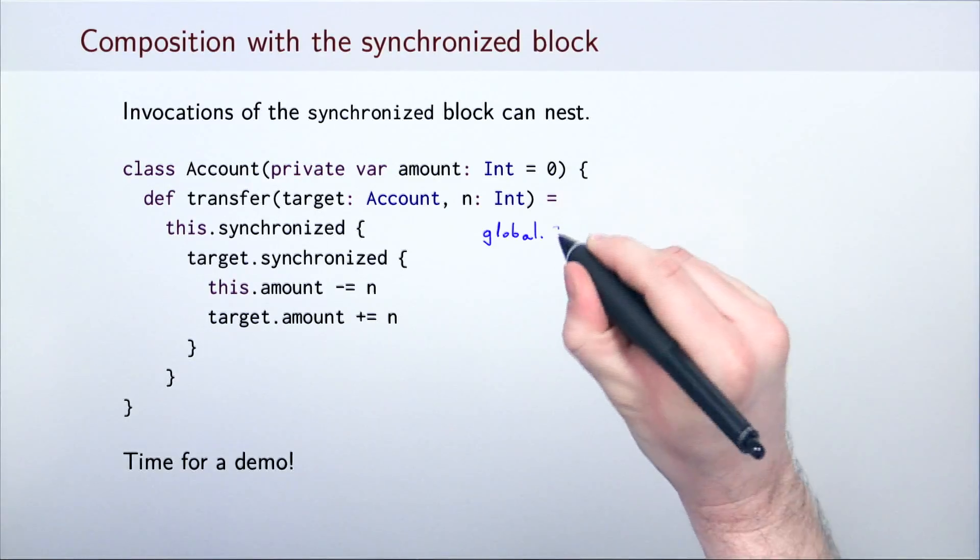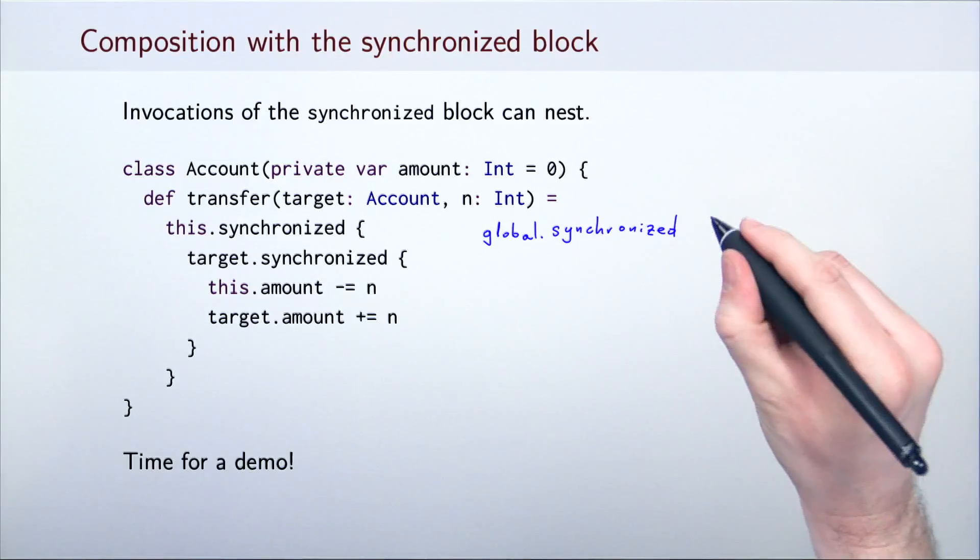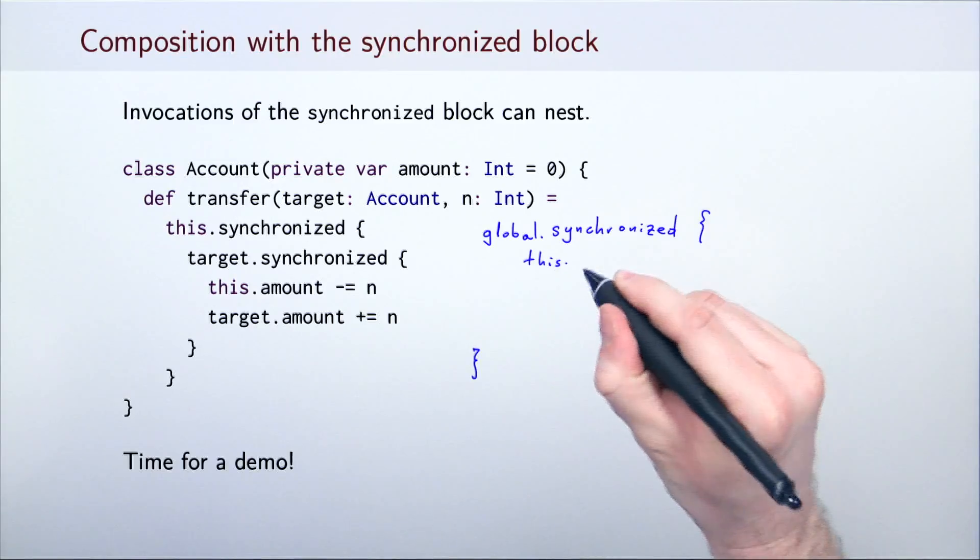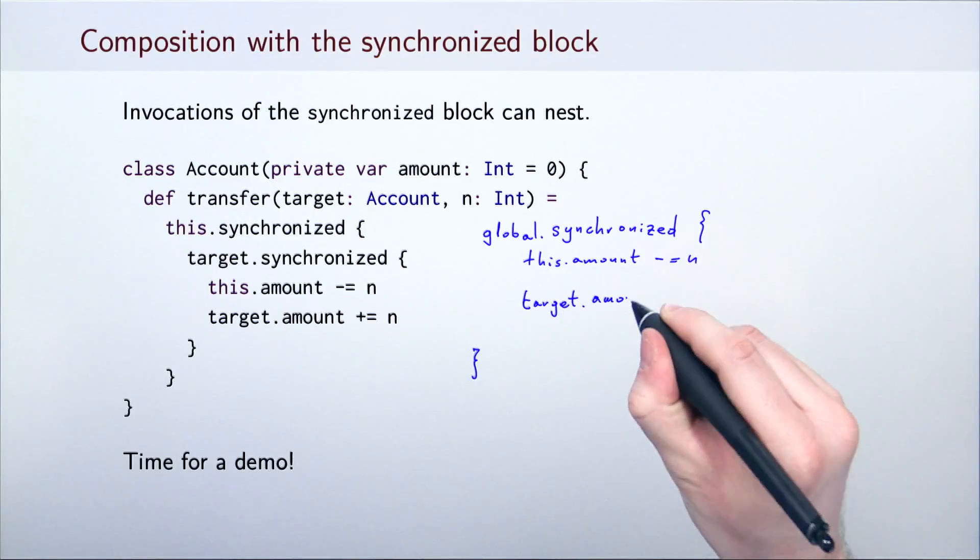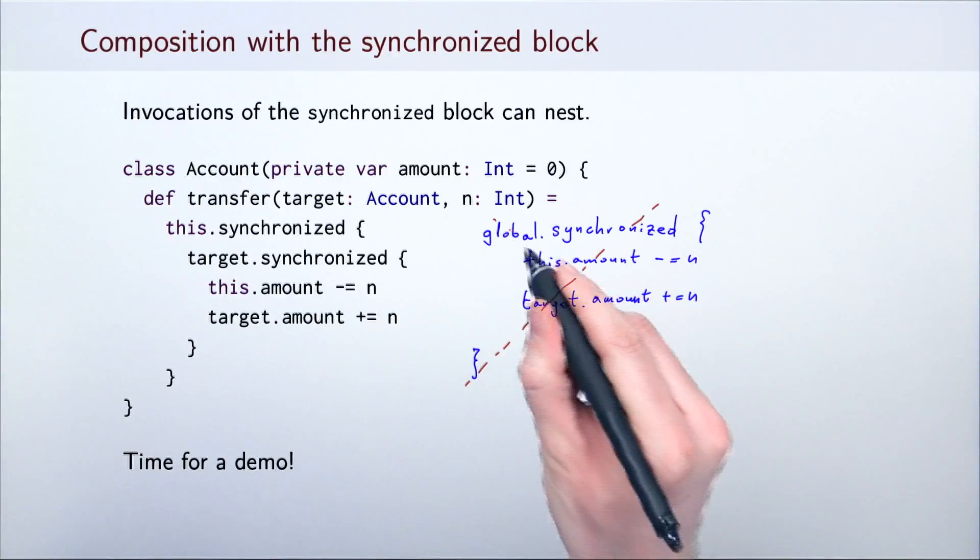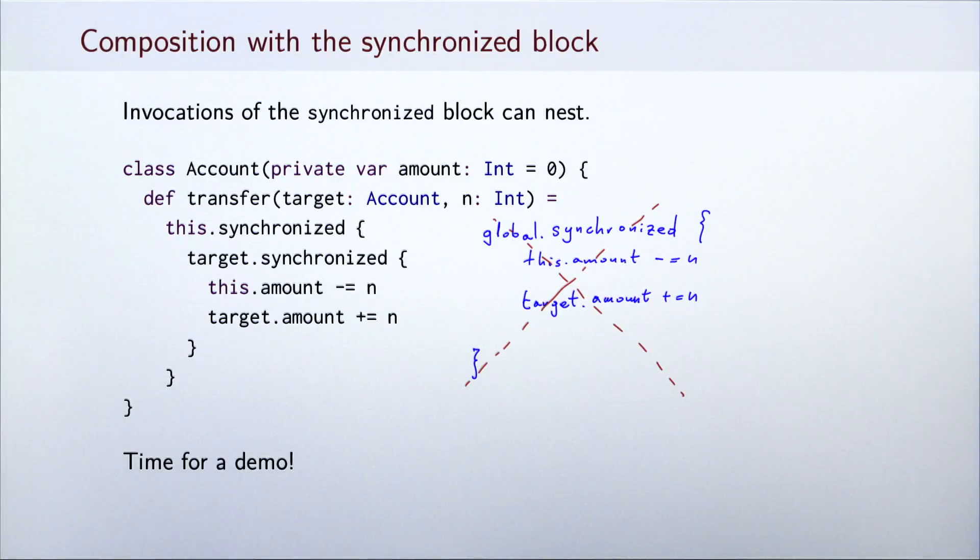To implement the transfer method, we do not want to have a single global object for the synchronized statement. This would be a bottleneck for parallelism in the system, especially if many transfers occur in parallel. Instead, we will use more fine-grained synchronization. We will start a synchronized block both on the source account and the target account.